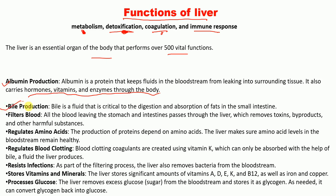The liver also produces bile, a fluid that is critical to the digestion and absorption of fat in the small intestine. Additionally, the liver filters blood — all blood leaving the stomach and intestines passes through the liver, which removes toxins, byproducts, and other harmful substances.